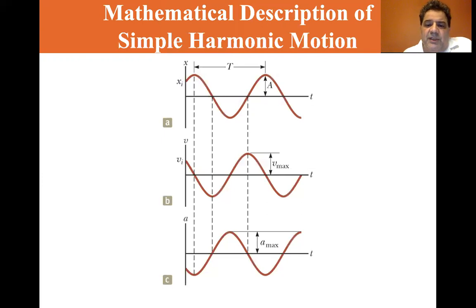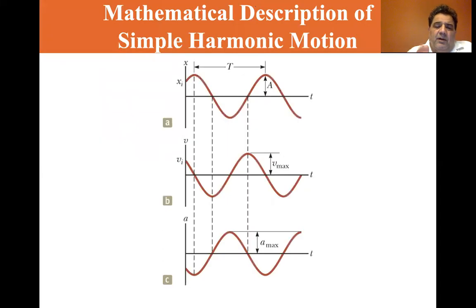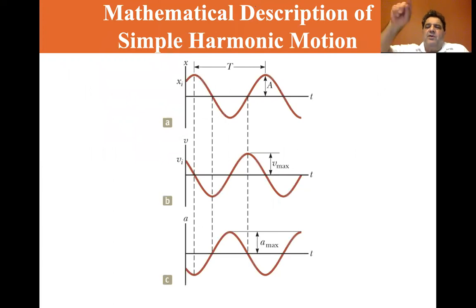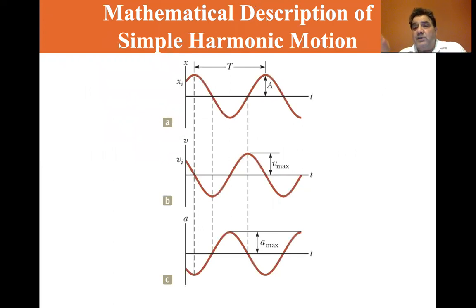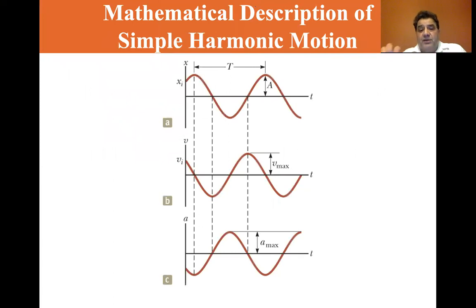The position maximum, velocity maximum, and acceleration maximum are all offset from one another. When the amplitude is greatest — for a spring, at either end — the velocity is zero. Velocity is maximum at the zero crossing. At the zero crossing, acceleration is zero; acceleration is greatest at either end of the maximum position.